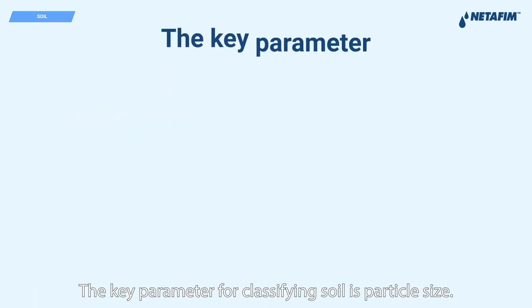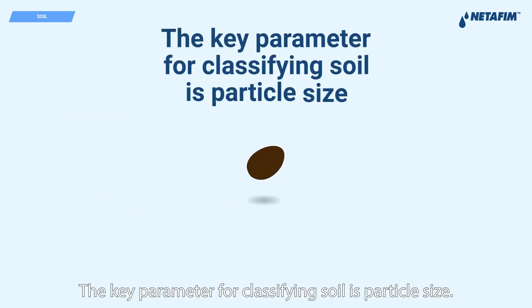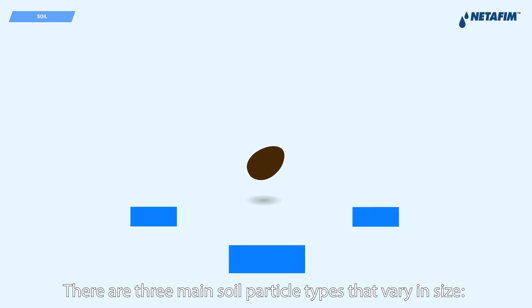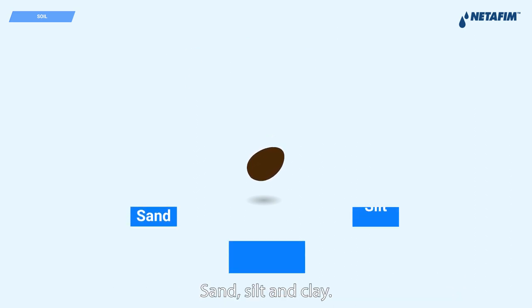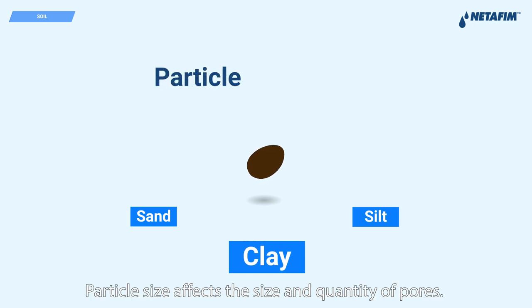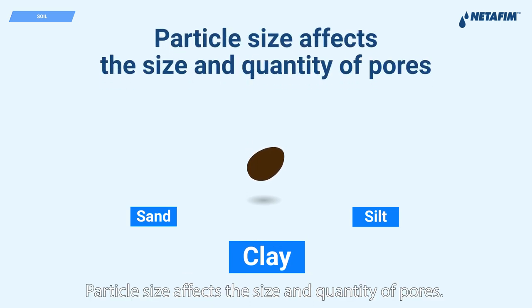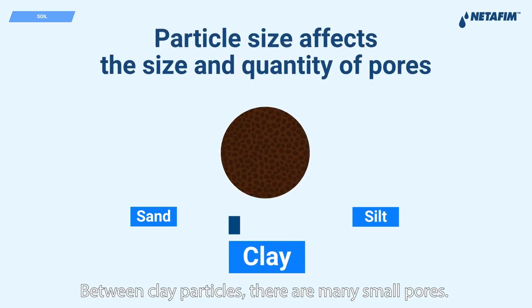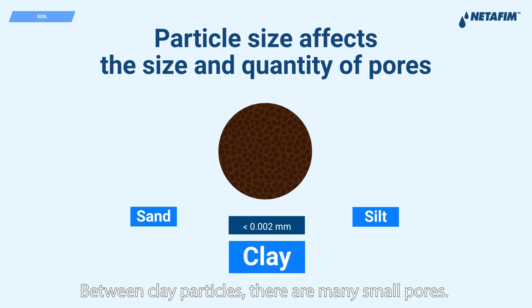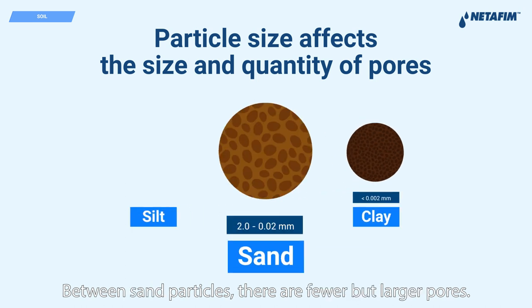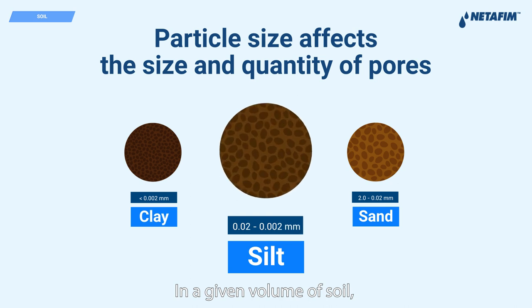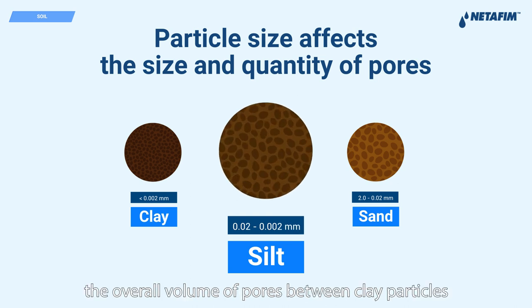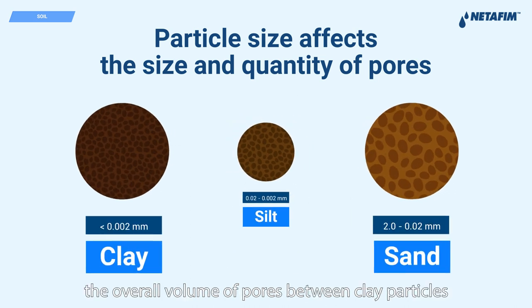The key parameter for classifying soil is particle size. There are three main soil particle types that vary in size: sand, silt, and clay. Particle size affects the size and quantity of pores. Between clay particles there are many small pores; between sand particles there are fewer but larger pores. In a given volume of soil, the overall volume of pores between clay particles will be bigger than between sand particles.